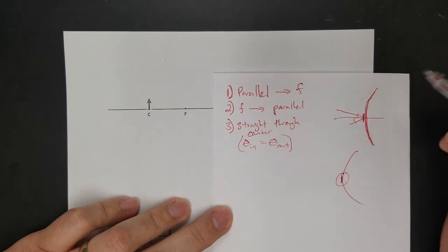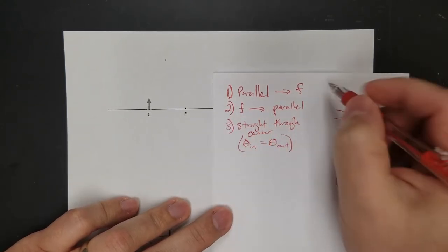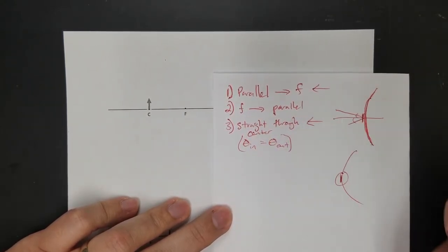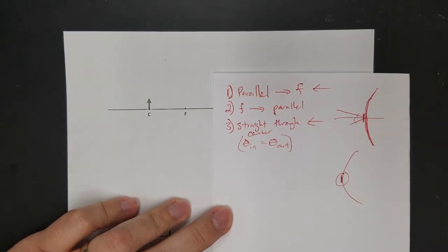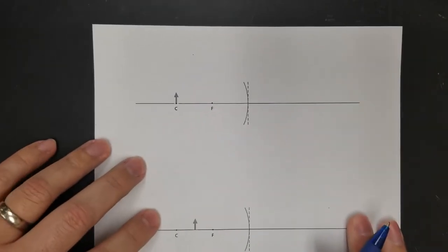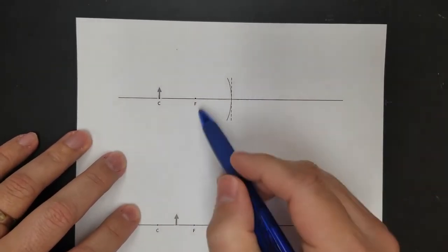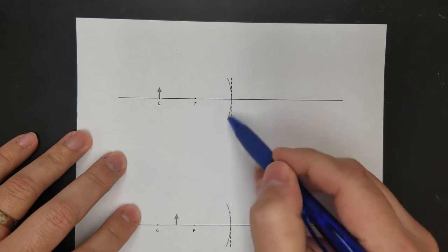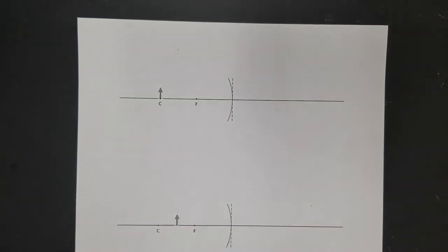The first two rays are the same. I don't even draw ray two — you can always get away with drawing ray one and ray three. But the third one, when it reflects, is going to have to make that same angle. So let's do a couple. Here's my first one: I'm going to draw all three rays for this converging mirror with the object outside of the focal point.